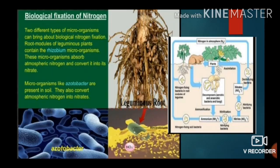Biological Fixation of Nitrogen: Two different types of microorganisms can bring about biological nitrogen fixation. Root nodules of leguminous plants contain the Rhizobium bacteria, which absorb atmospheric nitrogen and convert it into nitrates. Microorganisms like Azotobacter are present in the soil and also convert atmospheric nitrogen into nitrates.